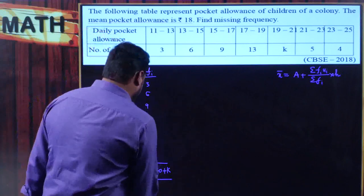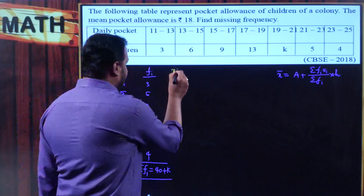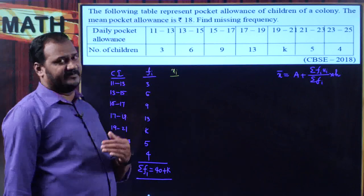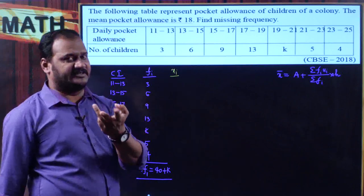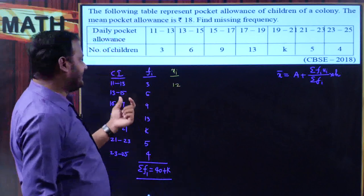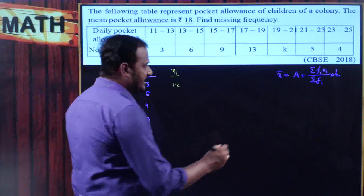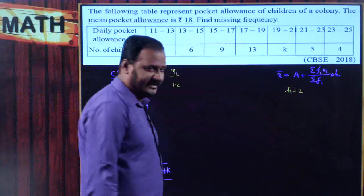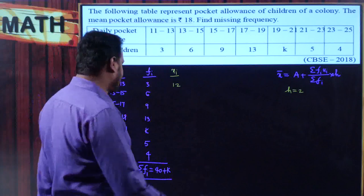After fi, I need to find the class marks — mid-values of the class intervals. Lower limit plus upper limit divided by 2. Between 11 and 13 the mid-value is 12. The class size h = 13−11 = 2. Since the class size is 2, I will directly add 2 to each successive mid-value.